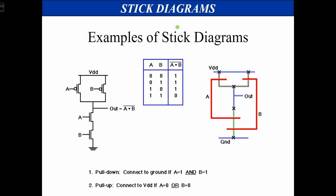For a NAND gate stick diagram: in the pull-up you have two PMOS in parallel, and in the pull-down you have two NMOS in series. VDD and ground are given. Both PMOS inputs A and B connect their gates, and in the pull-down network B is in series with A. In the pull-up network both P transistors are in parallel.